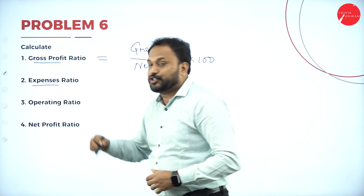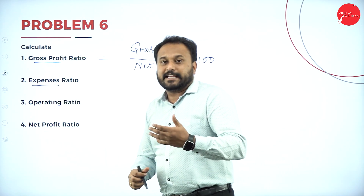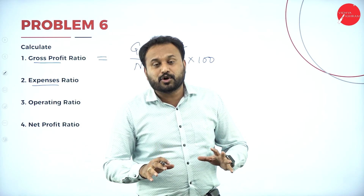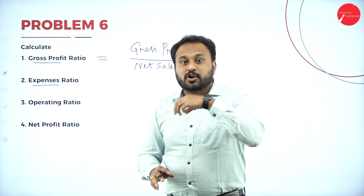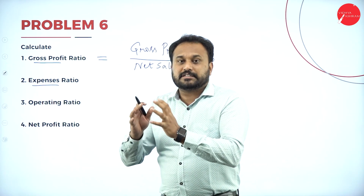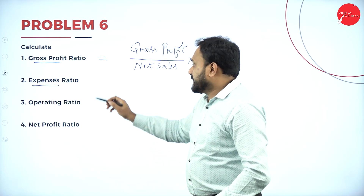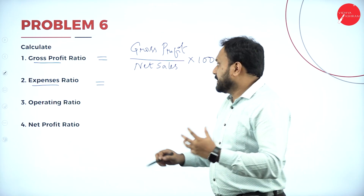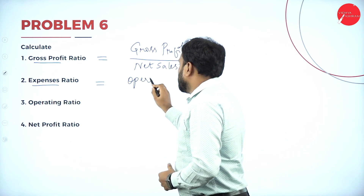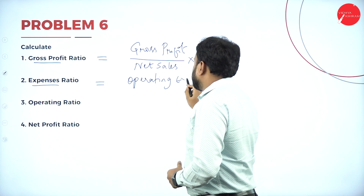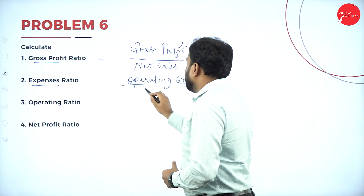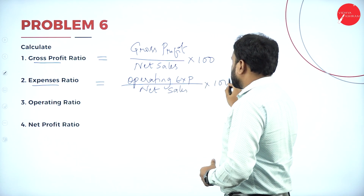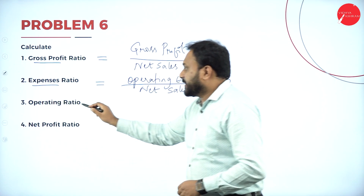So the Gross Profit Ratio formula is: Gross Profit divided by Net Sales, into 100. Similarly, Expenses Ratio — expenses means the expenses which happen in the organization. You will never go with non-operating expenses; it is only the direct operating expenses. Expense Ratio = Operating Expenses divided by Net Sales, into 100.